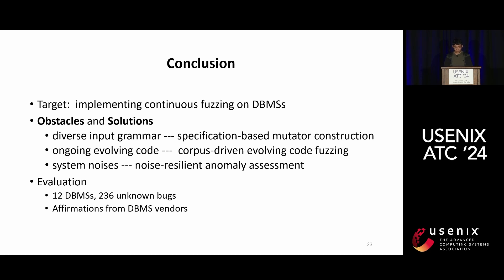In conclusion, we present the practice of implementing and deploying continuous fuzzing on enterprise-level DBMSs. In contrast to fuzzing function libraries or utility programs, this process presents significant obstacles: diverse input grammar, continuous evolution of the codebase, and system noise within the DBMS. We propose WinFuzz, which utilizes specification-based mutator construction, commit-aware fuzzing, and noise-resilient anomaly assessment to address them. We implemented WinFuzz to test 12 enterprise-level DBMSs and discovered 236 previously undiscovered bugs, received praise from vendors, and WinFuzz has been incorporated into ClickHouse's deployment process. Thank you.